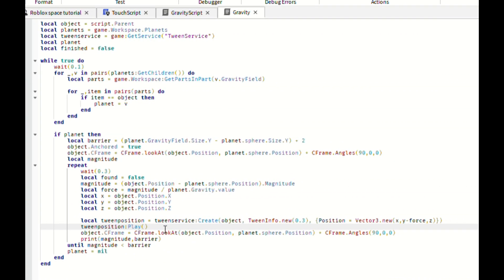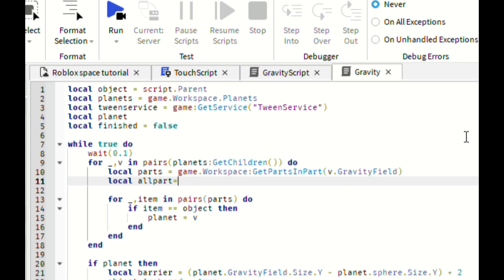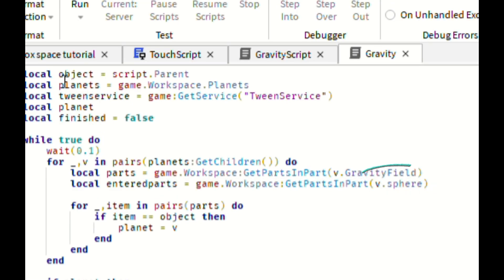So instead of touching scripts I made a while true loop to see if the robot was inside of the gravity. If so it would be pointed and dragged to the surface of the planet. But firstly, I needed to make the movement function when the part is found in the gravity field.